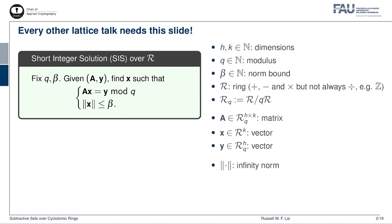Let me begin with this slide that every other lattice talk needs — the slide about the Short Integer Solution problem, or the SIS problem. The SIS problem is parameterized by a modulus Q and a norm-bound beta, and a problem instance is given by a matrix A and a vector Y. It asks us to find a short vector X such that A times X equals Y modulo Q, and the norm of X is bounded by beta. Usually the SIS problem is considered over the integer ring — that is, the matrix A, the vector Y, and X are all vectors and matrices over the ring of rational integers.